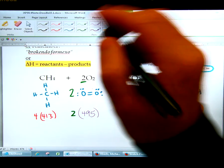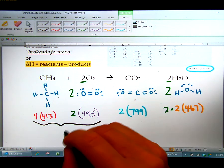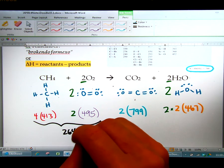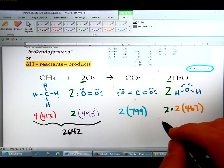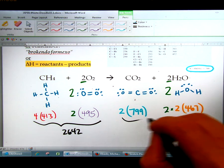So you're going to whip out your calculator. You're going to figure out all of the totals for each side. The total for this is 2642 kilojoules. The total for this side is 3466 kilojoules.